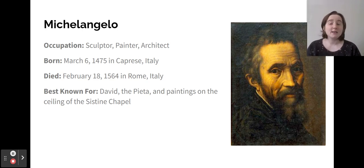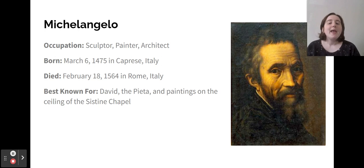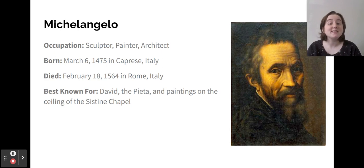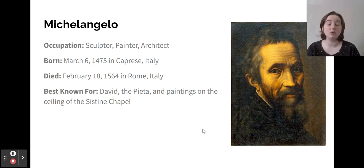Our next person is Michelangelo. His occupation was sculptor, painter, and architect. He was born March 6th, 1475 in Caprese, Italy, and he died February 18th, 1564 in Rome, Italy. He was best known for David, the Pietà, and the paintings on the ceiling of the Sistine Chapel.